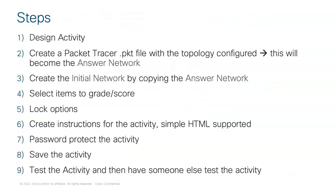The steps to create your own activity in Packet Tracer: first, design your activity — think about what you want to create before starting. For example, basic configuration and a bit of routing. Then create the topology — create what they have to achieve, which is the answer network. After that, create the initial network, which may start empty or with devices but nothing configured. Students work from the initial network to achieve the answer network.